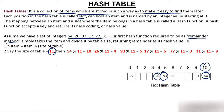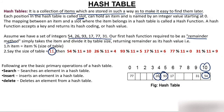The basic primary operations of a hash table are: you can search an item, you can insert an item, and you can delete an item from the hash table.